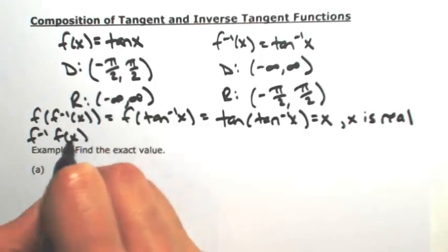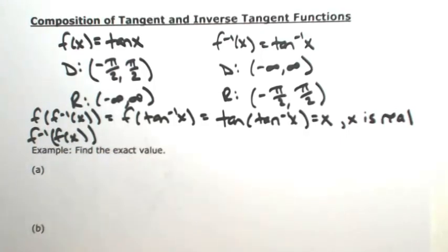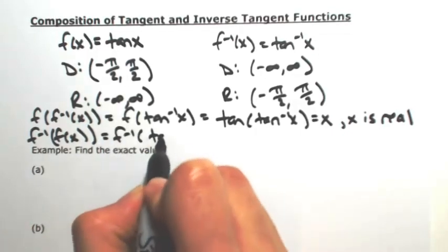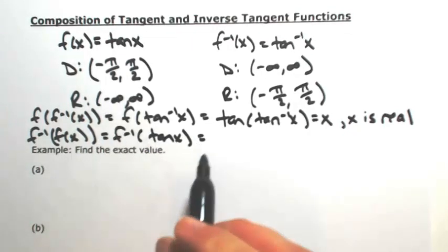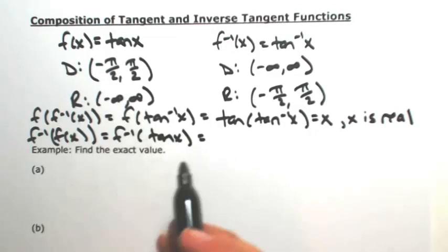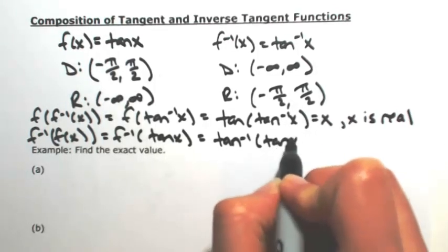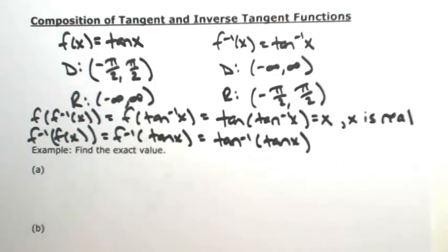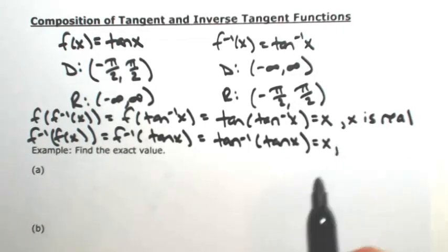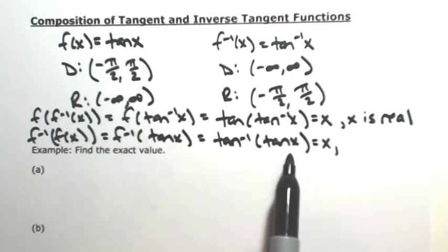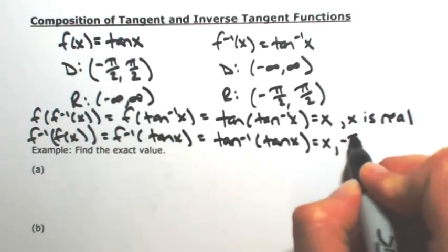Let's go the other way. f inverse composed with f gives us f inverse of tangent of x, so tangent of x goes inside of the inverse tangent. Since they're inverses they undo each other as long as the restriction is satisfied. Looking at the inside, we need the tangent restriction — the angle restriction — which is negative pi over 2 to pi over 2.